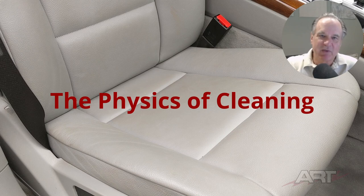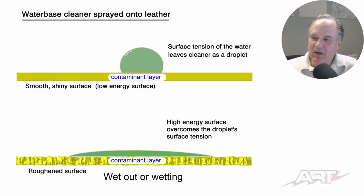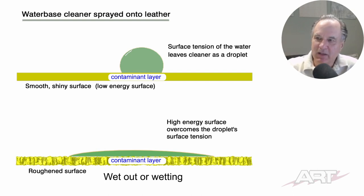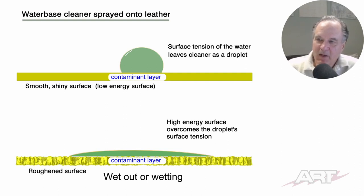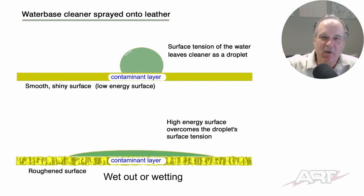Now it's time to talk about the physics of cleaning — the real mechanical part of it. I've put a little diagram here to demonstrate spraying our degreaser onto the leather. As you'll notice, we haven't got to the leather yet because there's a contaminant layer. We see this droplet representing our water-based cleaner. The contaminant layer is that oily, dirty layer we discussed — it's a low energy surface, which means our water wants to bead up on this dirt contaminant layer.